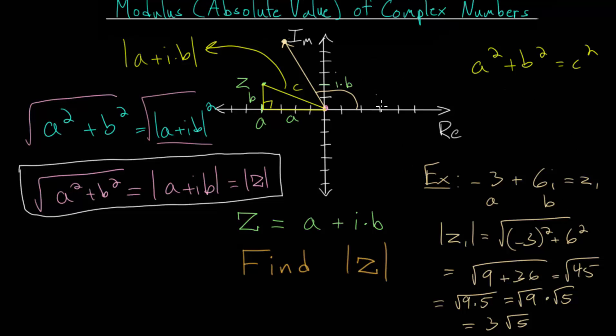So this is something we will talk about in later videos, but it does come up frequently, this need to find the length of the line between the complex number and the origin. And for this specific example, the length of this vector here, this absolute value of the complex number, its modulus, is 3 times the square root of 5.